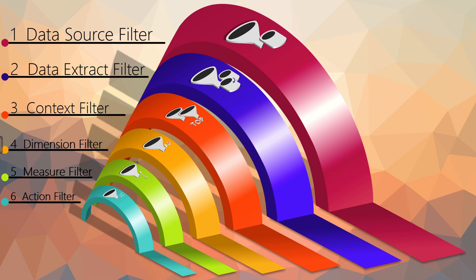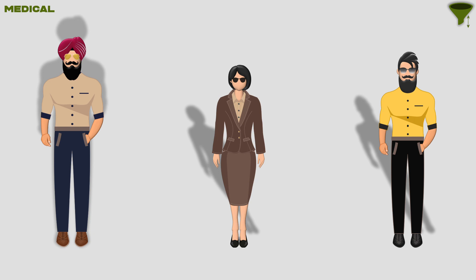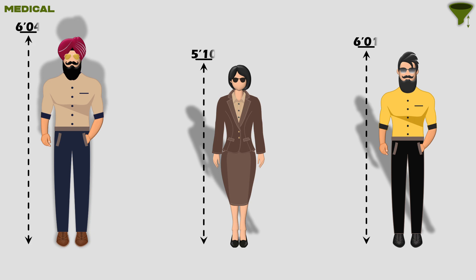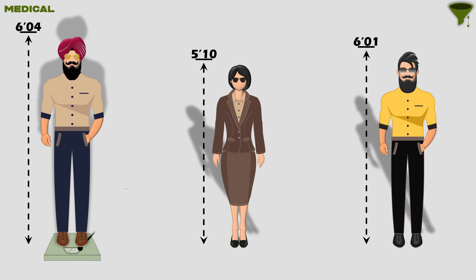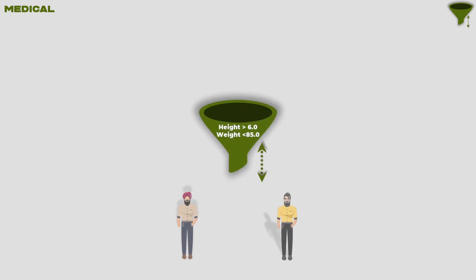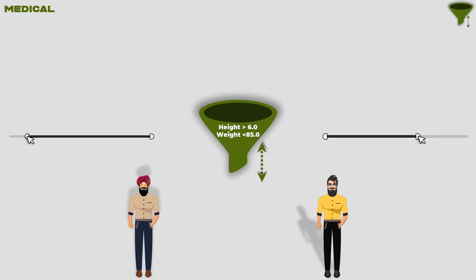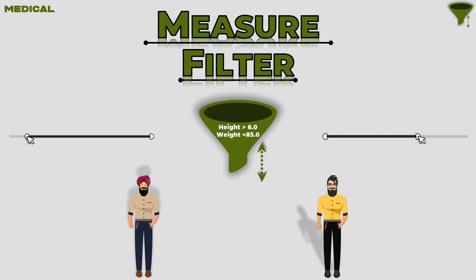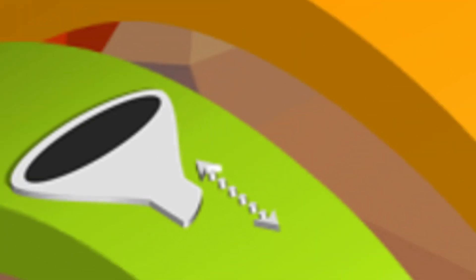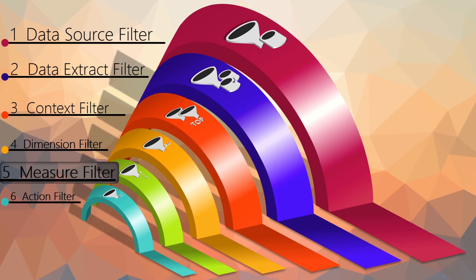After the interview, the next round is the medical round, where physical information of every candidate — such as height and weight — is checked. Candidates are filtered on the condition that those with height above 6.0 and weight above 85.0 are the only ones suitable for the mission, and the rest are filtered out. This type of selection process is similar to the measure filter in Tableau, where continuous numerical values are filtered.